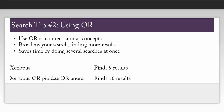The second tip is to use the word OR to combine synonyms or near synonyms. Using OR will broaden your search results by telling the database that only one of your search terms has to be included in each article.